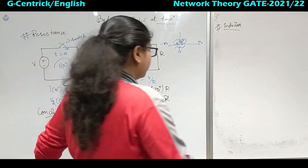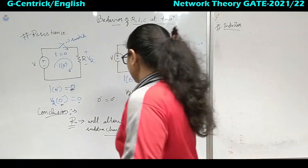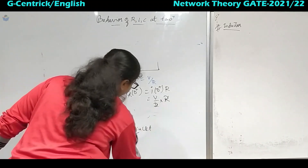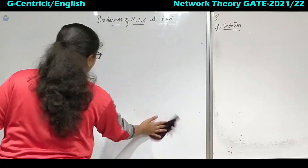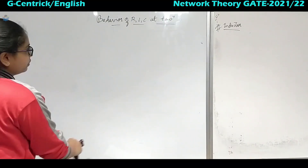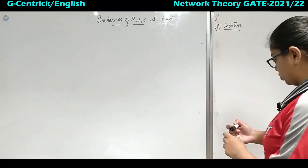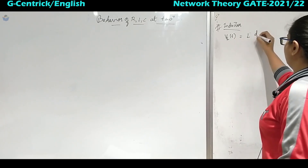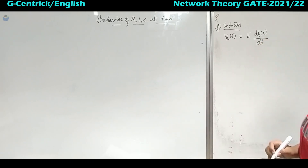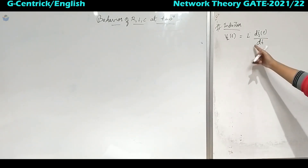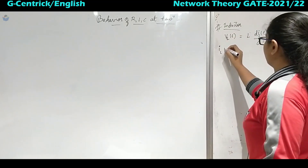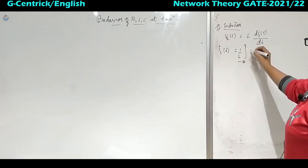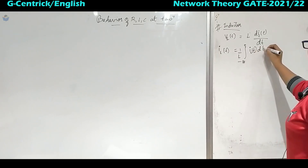Next we will come to the inductor. We know the voltage across the inductor is VL = L di/dt. In terms of current: IL(t) = (1/L) × integral from minus infinity to t of VL(t) dt.